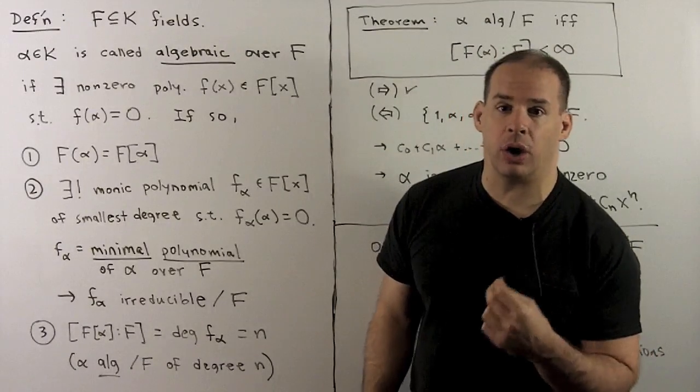We also have that this minimal polynomial is irreducible over F. Finally, if we take the degree of F adjoined alpha over F — the dimension of F adjoined alpha over F as a vector space — this equals the degree of the minimal polynomial for alpha. If this is equal to N, we say that alpha is algebraic over F of degree N.